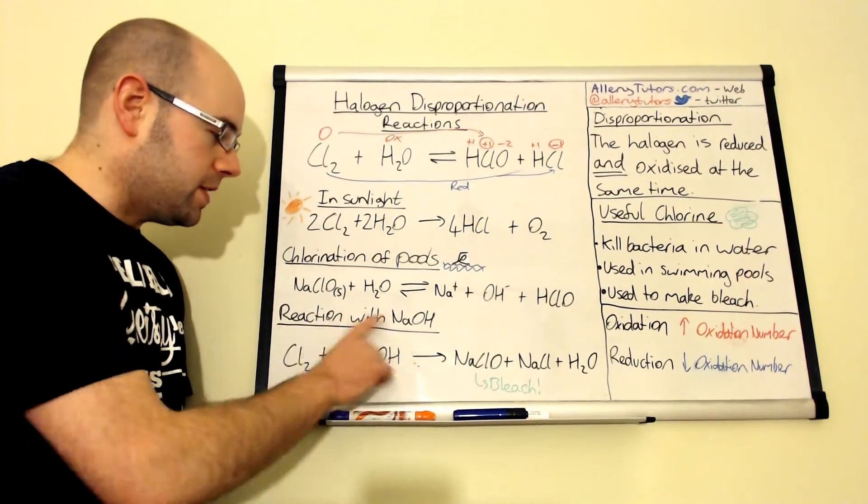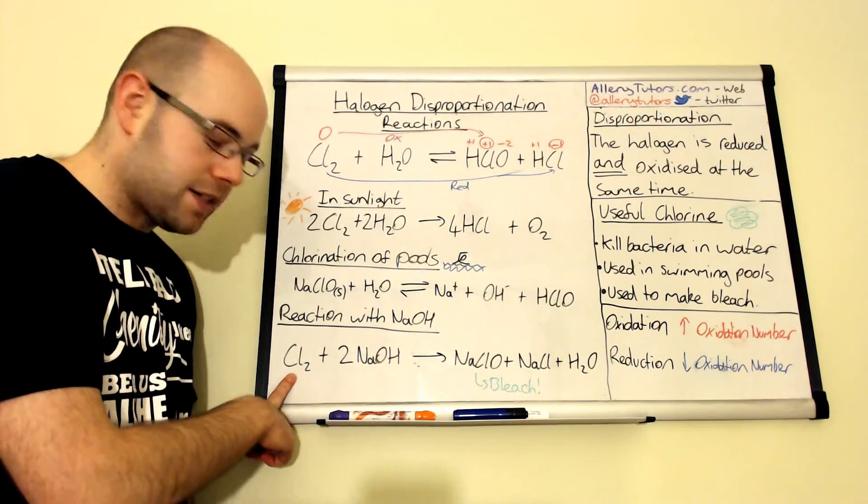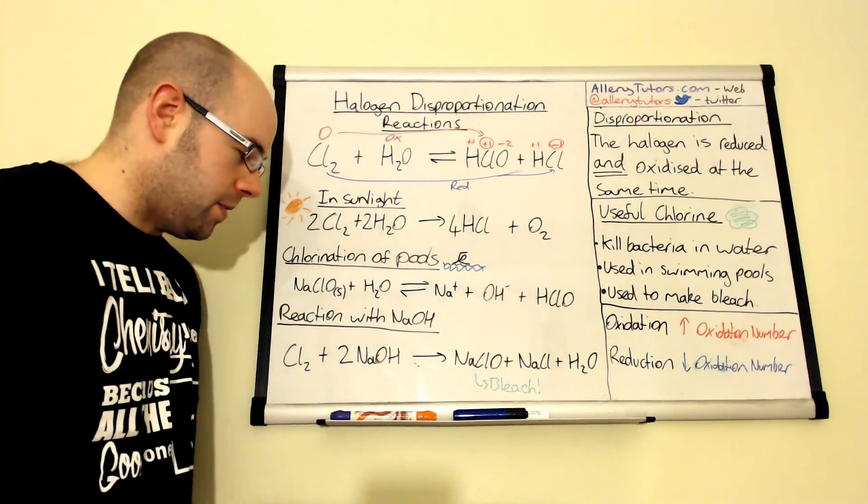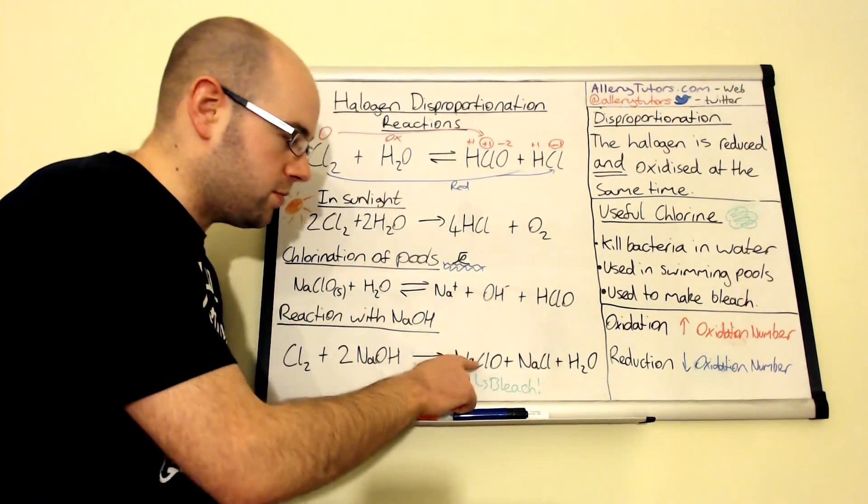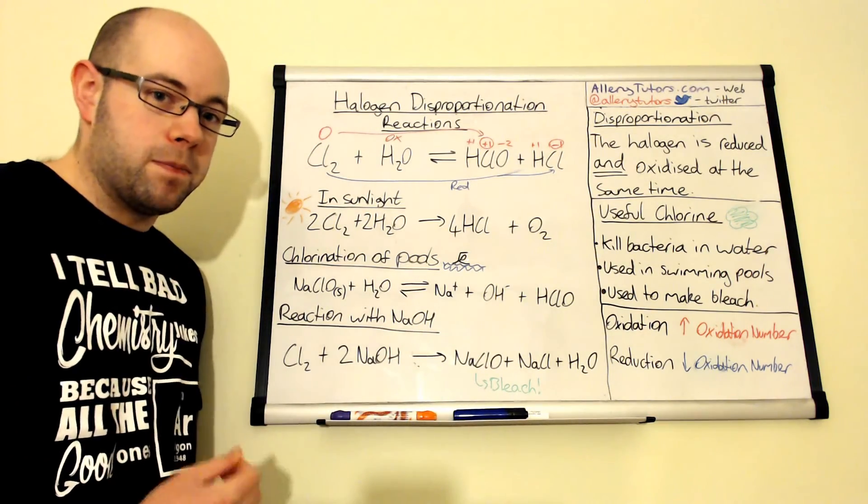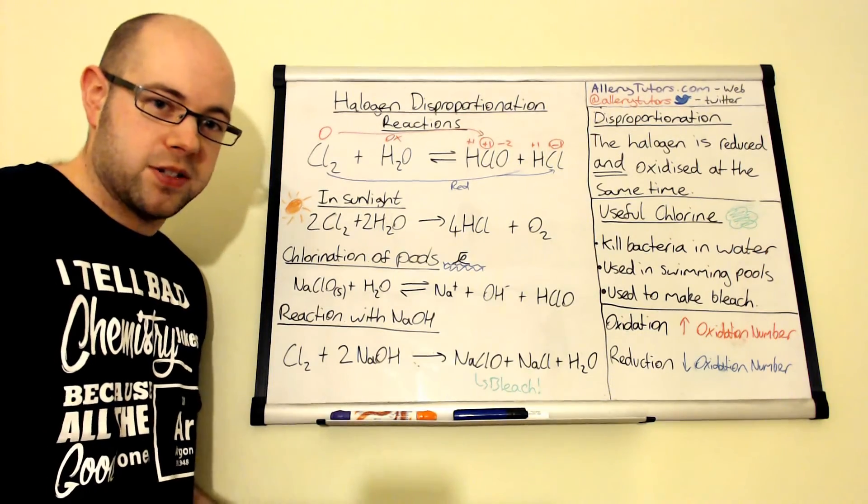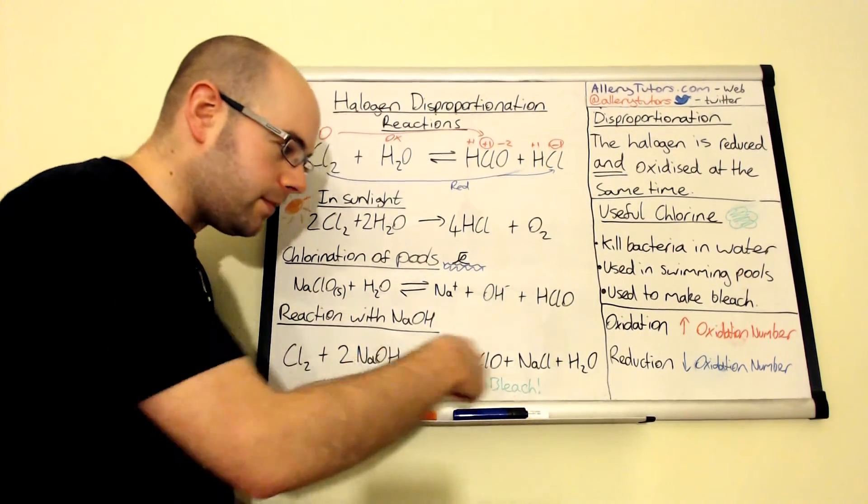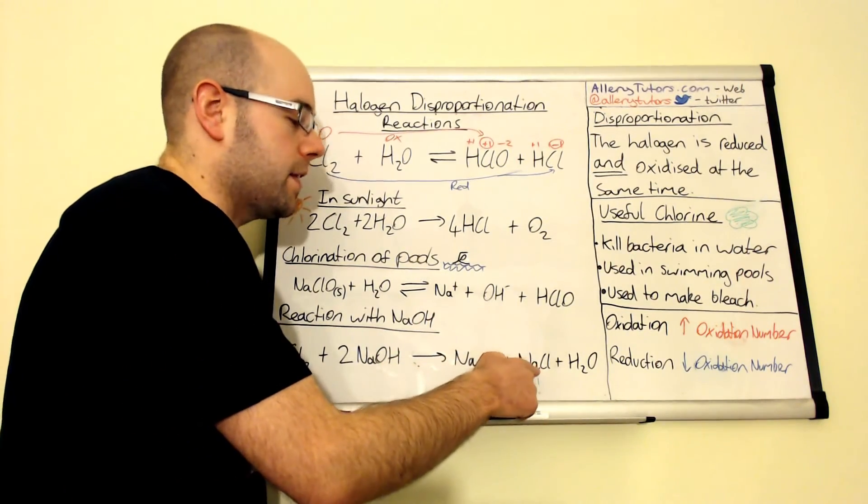Now there's one other use for it, which is used to make bleach as well. This is the reaction with sodium hydroxide. So if you take chlorine gas again and react that with sodium hydroxide solution, like I've written down here, actually what you make is sodium chlorate, which is this substance here. And that is effectively your bleach. That's the active ingredient that you'll find in your household bleach, like Domestos and supermarket own brands, etc., if it's chlorine-based. It's sodium chloride and water.